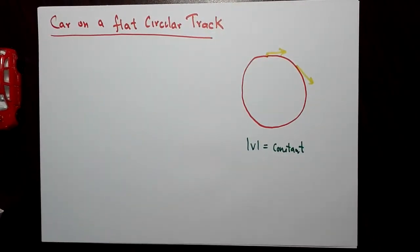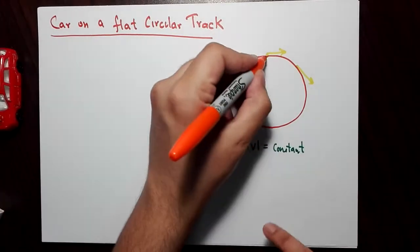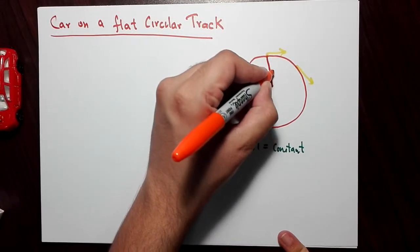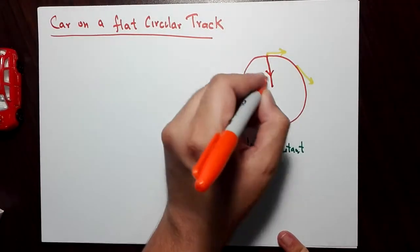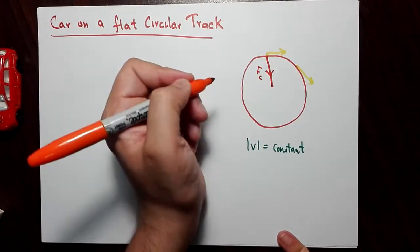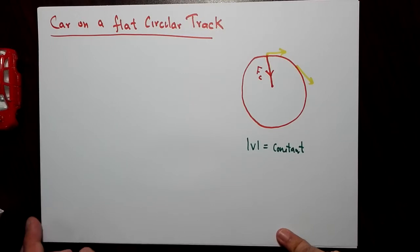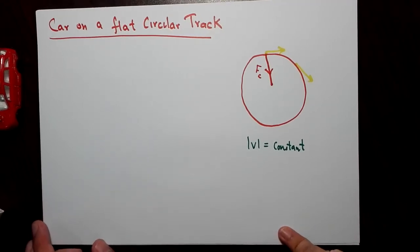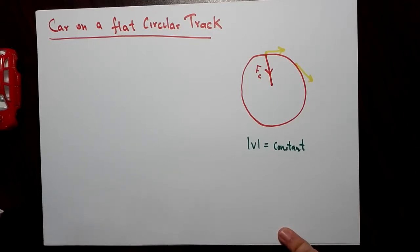Now, since the car is in a circular path, there is obviously a force that's keeping it in that circular path. That's the centripetal force. But remember, centripetal force is not a new force, it's not a new type of force. It's a generic name for any force. So any force can be centripetal force,